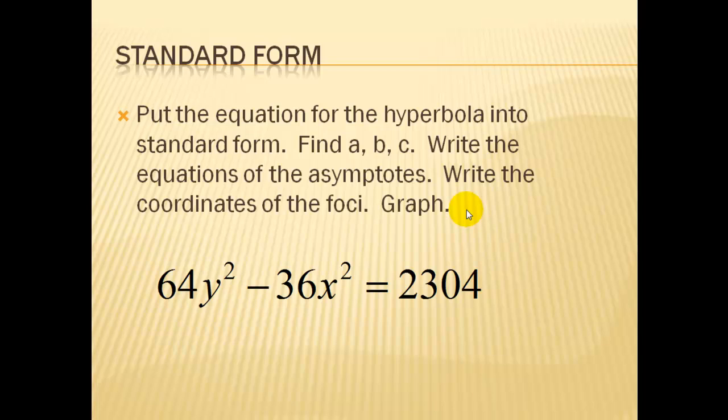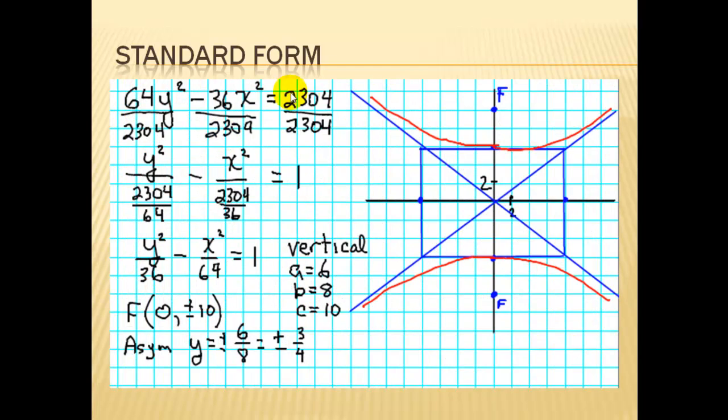In this example, the equation we start out is not in standard form. We do know it's a hyperbola because we have both an x and a y squared and subtracted. But we need this to be a 1, so we have to divide all parts of the equation by that number so that we can create a 1 here.